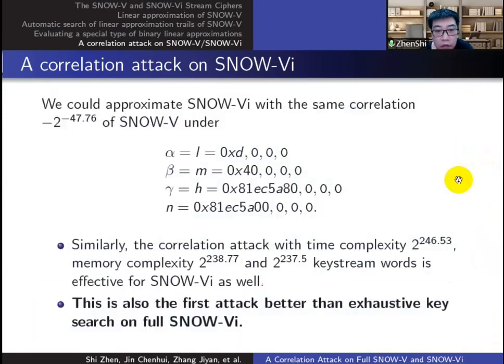So the results of SNOW-V are also appropriate for SNOW-Vi, and the correlation attack on SNOW-V is effective for SNOW-Vi as well. This is also the first attack better than exhaustive key search on full SNOW-Vi.